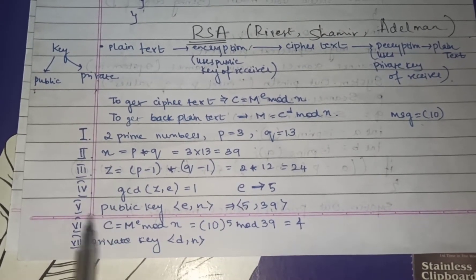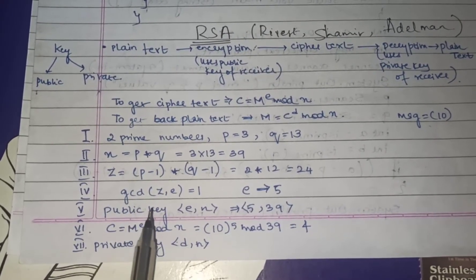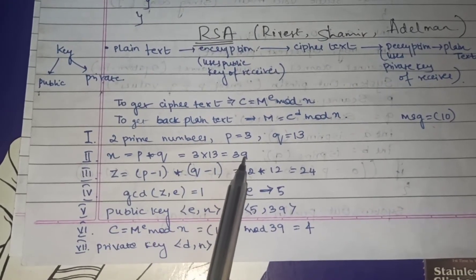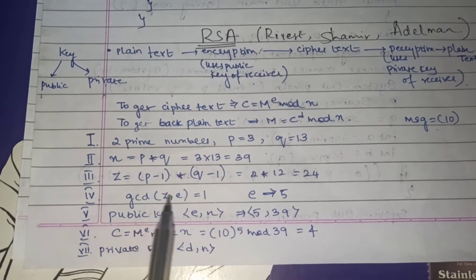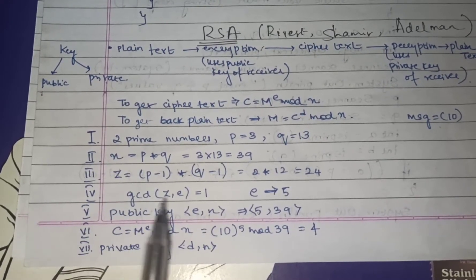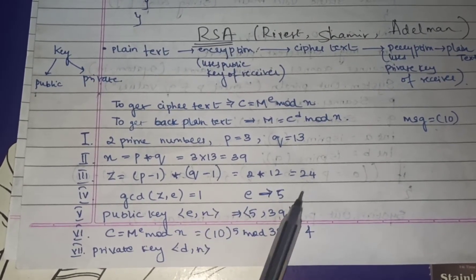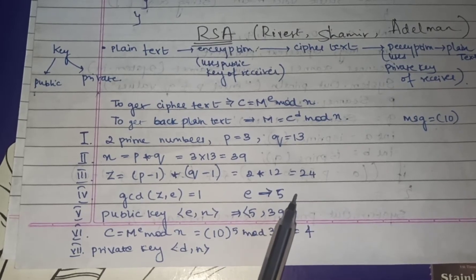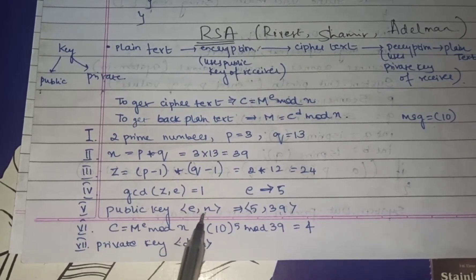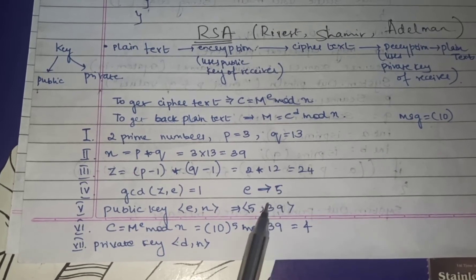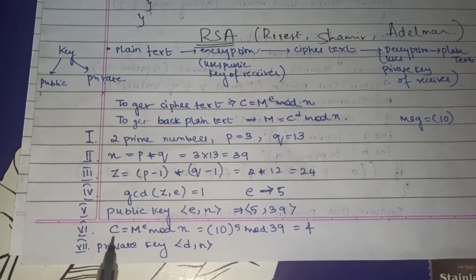Next, find the value of e. The value of e should be less than n (39), and gcd(z, e) must equal 1 — meaning e and z share no common factors other than 1. Since 5 and 24 have no common factors other than 1, e = 5. The public key pair is (e, n) = (5, 39).